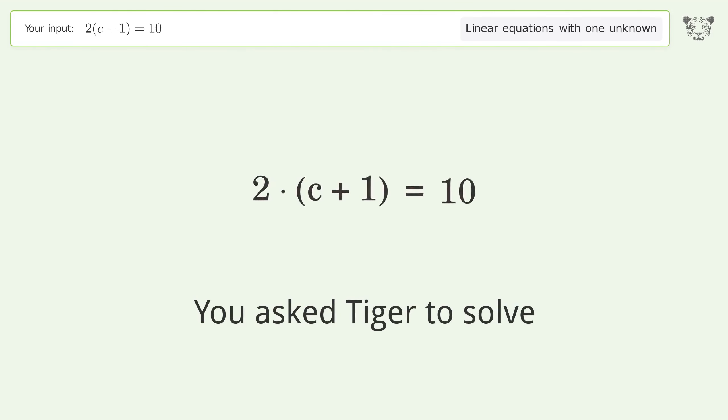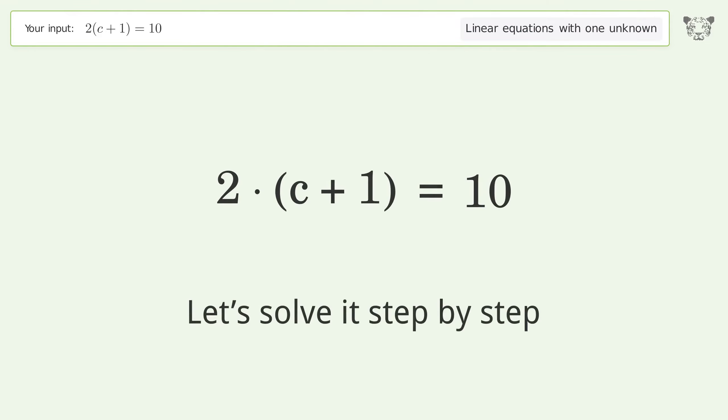You asked Tiger to solve this. This deals with linear equations with one unknown. The final result is c equals 4. Let's solve it step by step.